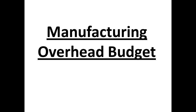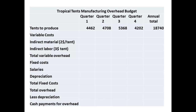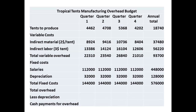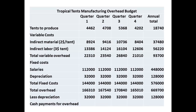The last budget for the production of the tents is the manufacturing overhead budget. Once again, we start with the number of tents that need to be produced for each quarter. We enter the unit variable costs — indirect materials and indirect labor — and determine the total variable overhead for each quarter. There may be other variable costs, but we have tried to keep this as simple as we can. The fixed costs of salaries and depreciation are entered to give total fixed costs. The total overhead is determined. However, for the purpose of determining cash payments, we now need to subtract out the depreciation. This gives us the figures for cash payments for overhead each quarter.